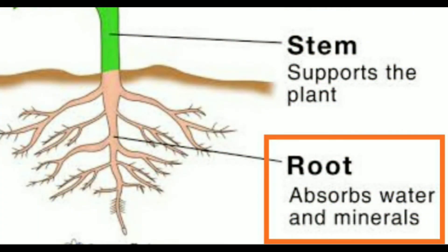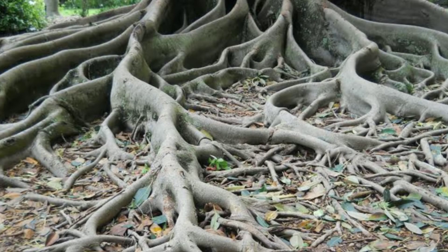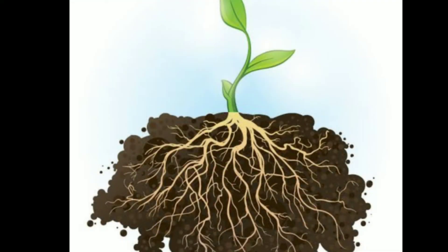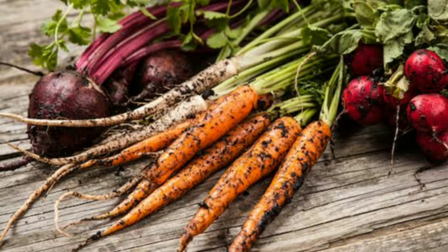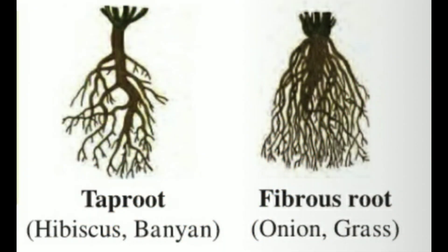Roots hold the soil firmly and anchor the plant. The main functions of the root are to absorb and transport water and nutrients from the soil. The roots of the carrot and radish also store food. There are two types of roots: tap root and fibrous root.